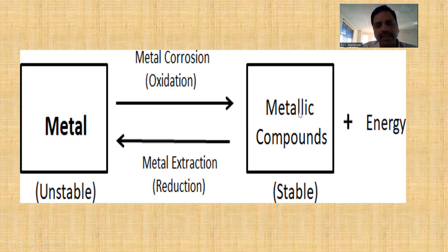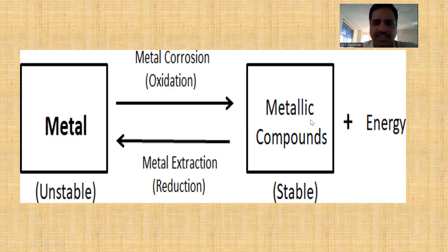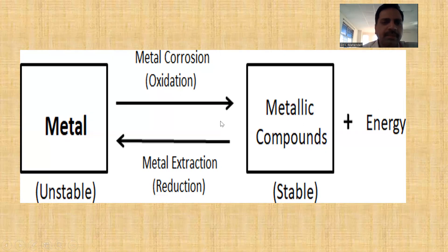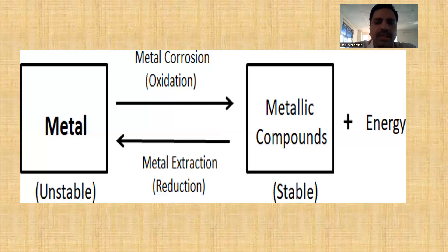The metallic compounds, the ores we extract from the earth's crust — that process is called reduction, also known as extraction of metals from their ore. This is the mechanism behind why metals undergo corrosion. Different metals will undergo different types of corrosion depending upon the nature of the metal and the environmental conditions.